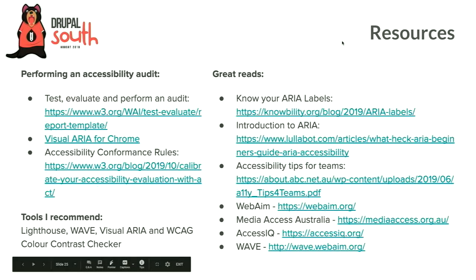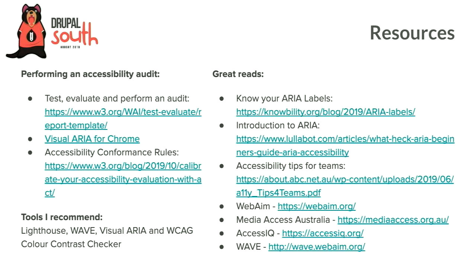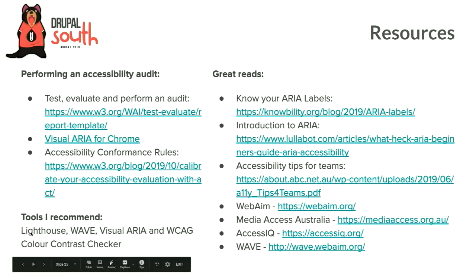As I want to have some time for questions, I've included a lot of resources. For doing an audit, W3C give you a report template you could use. I highly recommend Visual ARIA for Chrome. There are links for ARIA conformance rules, knowing how to use ARIA labels, and an introduction. There was an article by Lullabot on the Drupal front about 'what the heck is ARIA' — probably one of the best written introductions I've seen. The tools I recommend are Lighthouse, WAVE, Visual ARIA, and the WCAG Colour Contrast Checker.